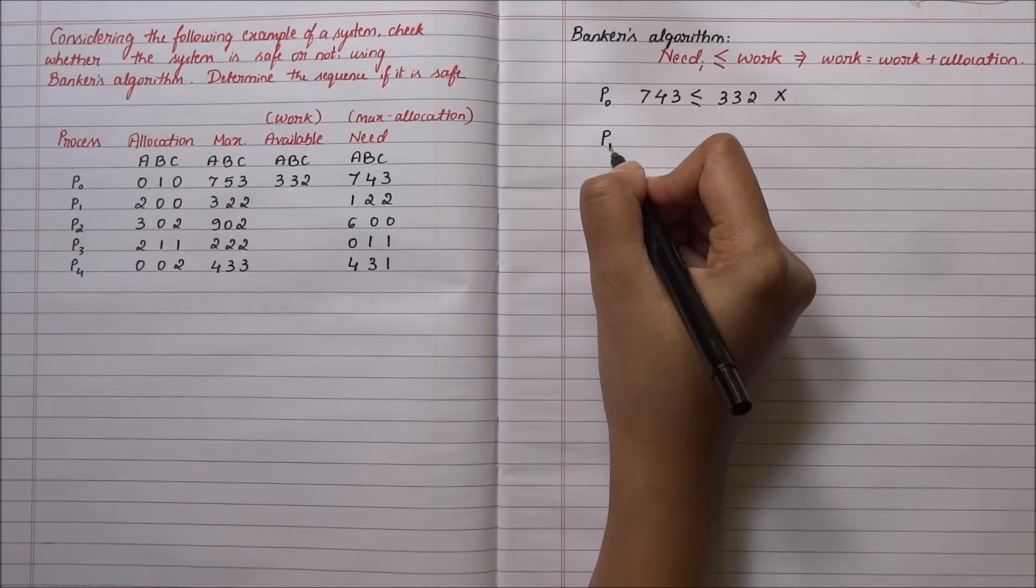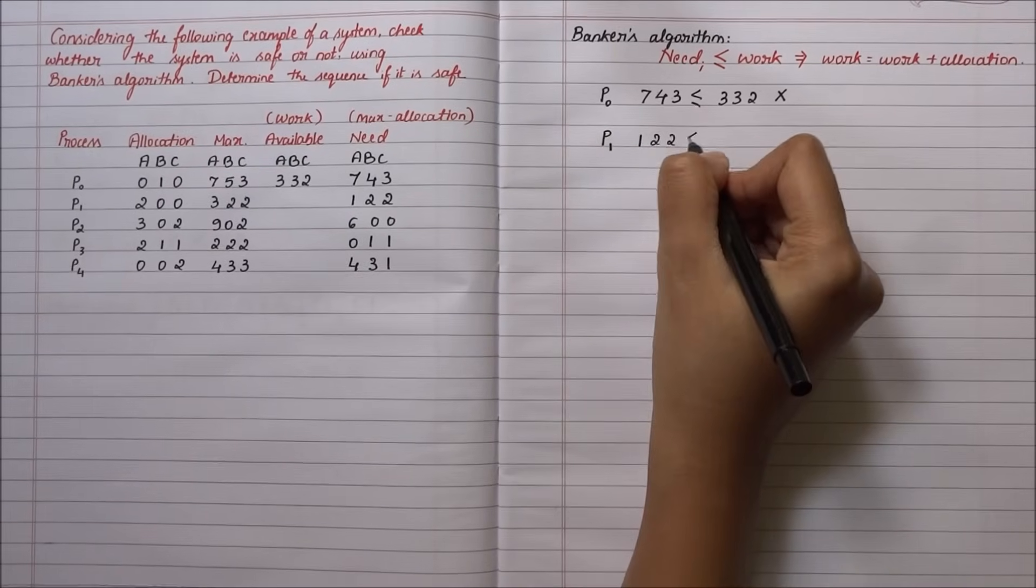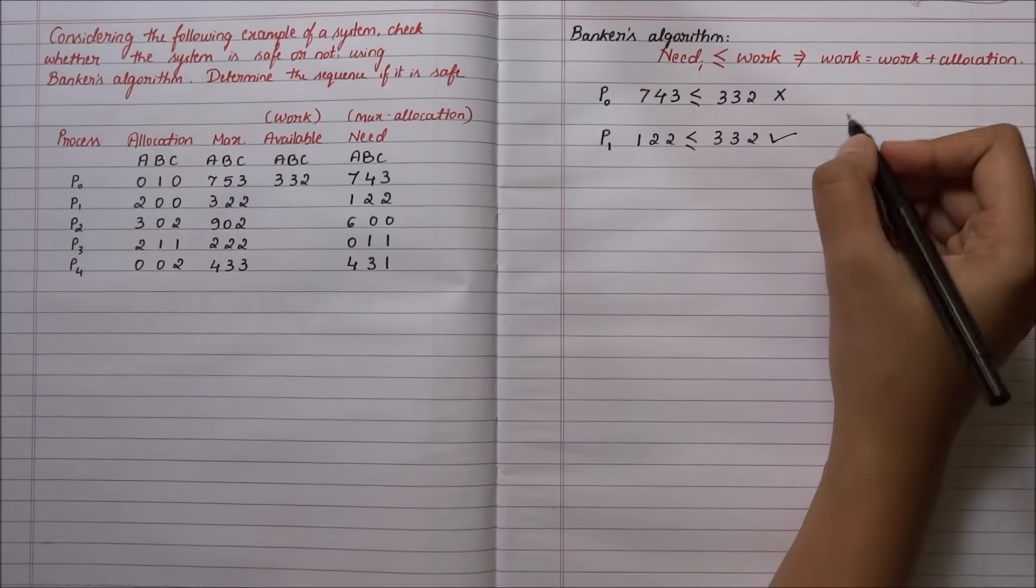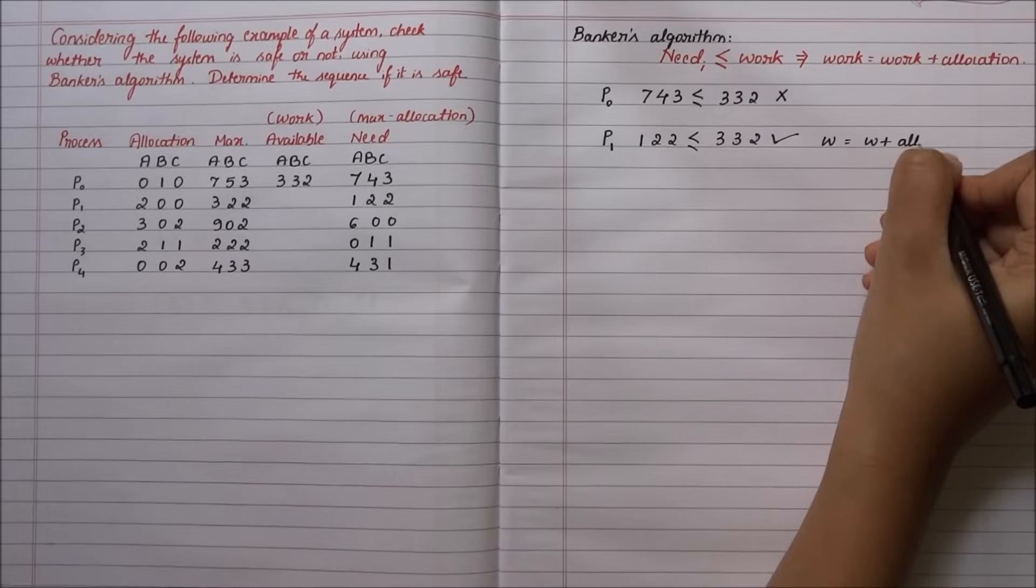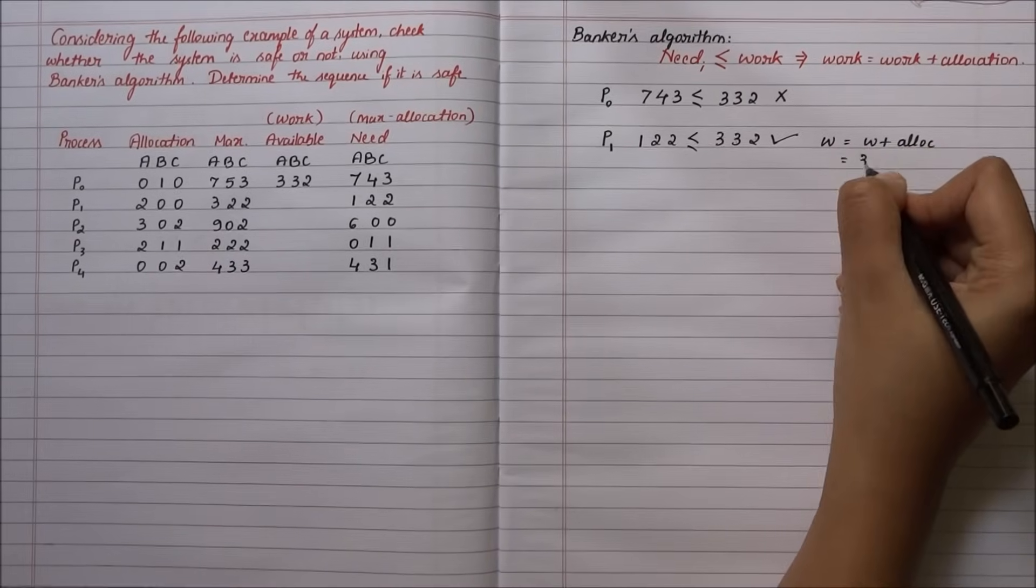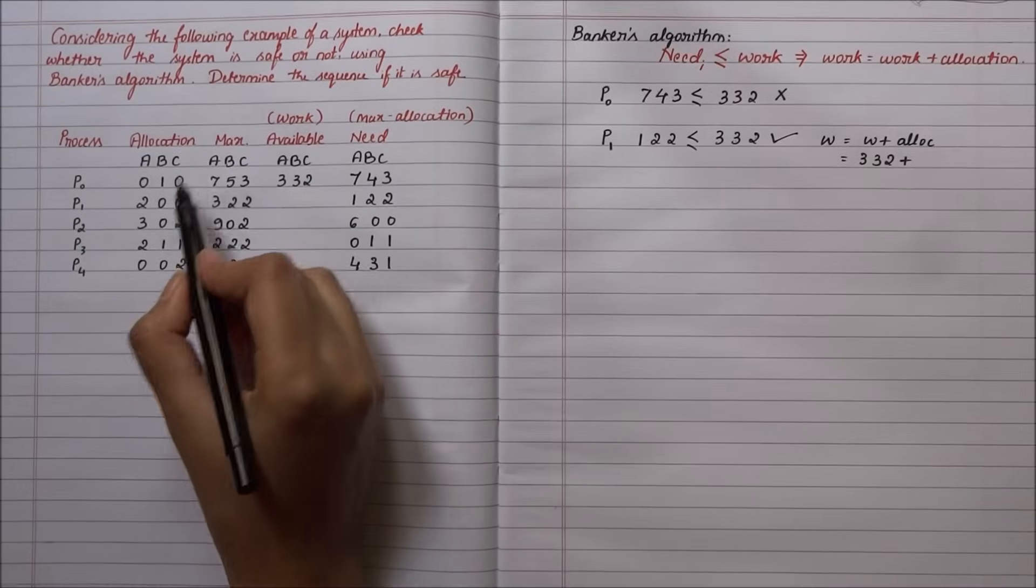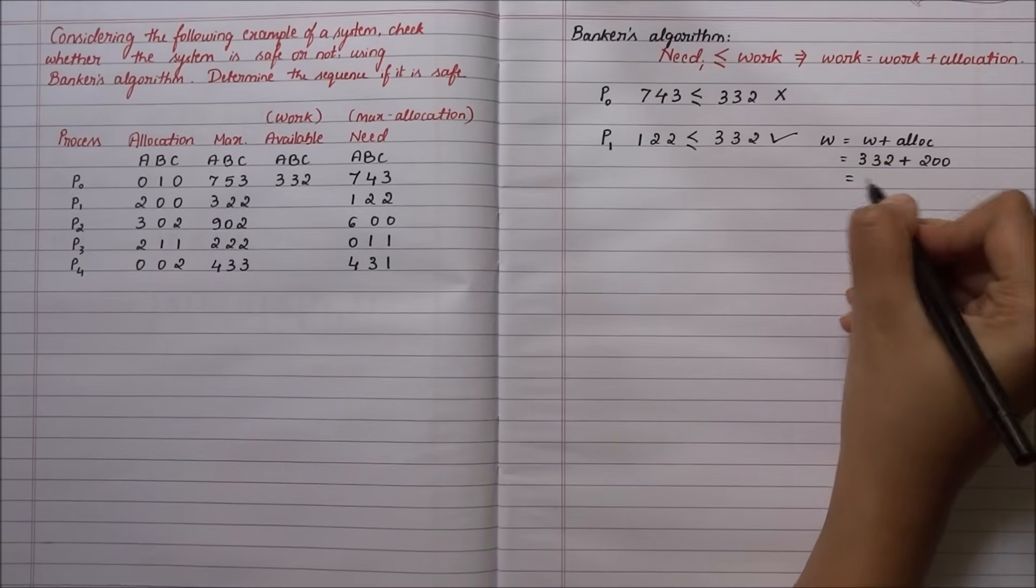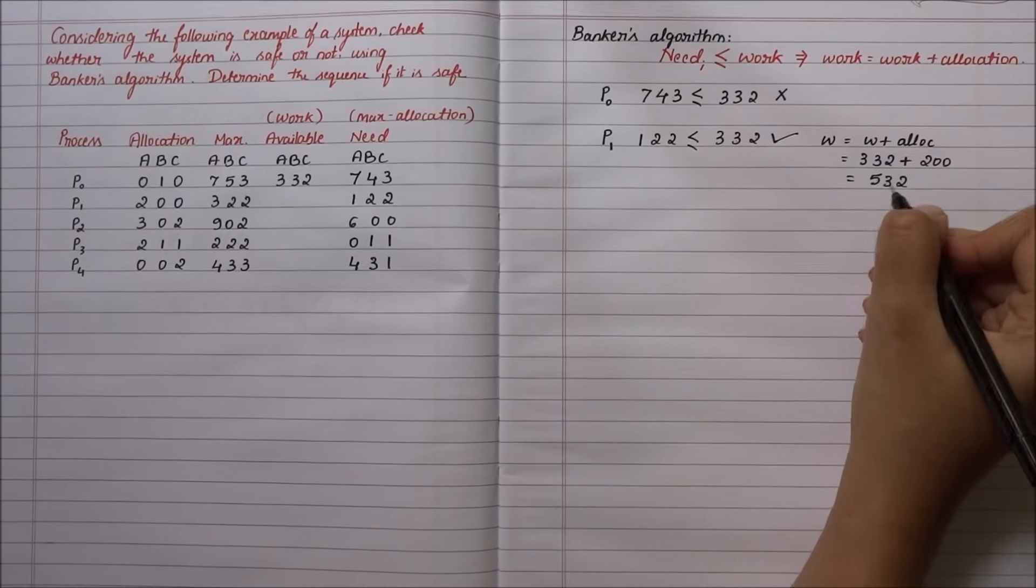Next process is P1 whose need is 1-2-2, which is less than or equal to 3-3-2. This is true. The new work becomes work plus allocation: 3-3-2 plus allocation of P1, which is 2-0-0, equals 5-3-2. We update this in the matrix.